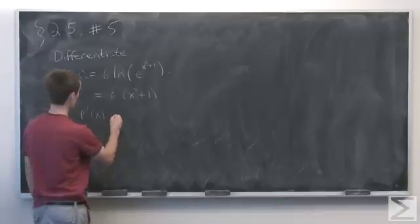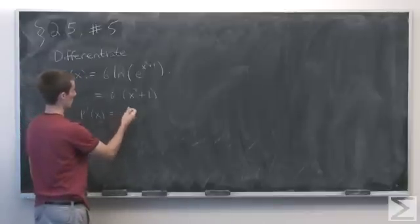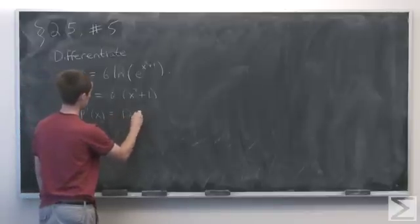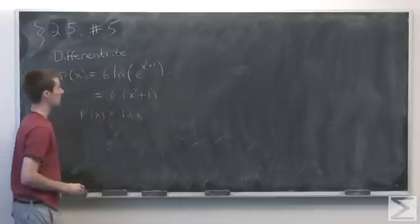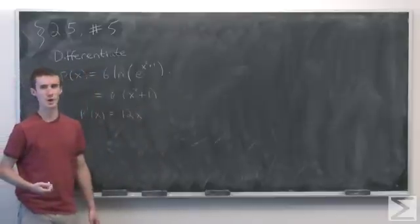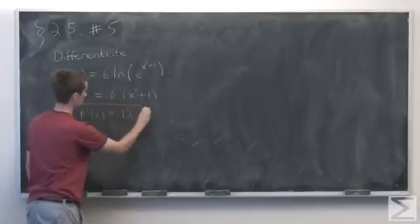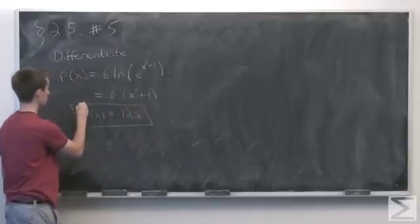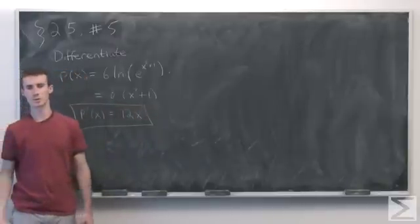So p prime of x will equal, applying the power rule, twelve times x and our second term is just the constant six. So the derivative of that term is zero and our final answer is just 12x.